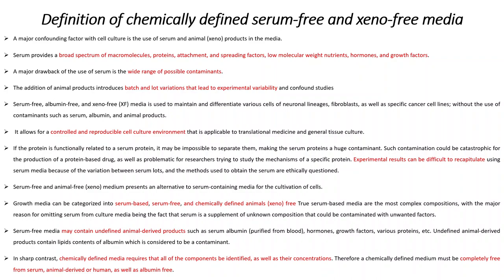The chemically defined medium requires that all of the ingredients present in it be properly identified, as well as their concentrations. A chemically defined medium is completely free from serum or any animal derived by-products, and is albumin free. So a chemically defined medium is different from a serum free medium in that it excludes all such animal-derived components.